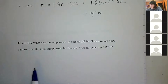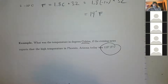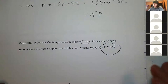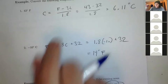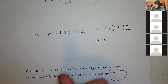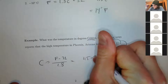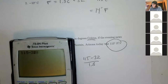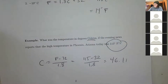Word problem: 'What was the temperature in degrees Celsius if the evening news reports the high in Phoenix, Arizona was 115°F?' They just want you to convert Fahrenheit to Celsius in a practical context. Use C = (F − 32) / 1.8. Plug in 115: (115 − 32) / 1.8. Calculator: 115 − 32 divided by 1.8 gives approximately 46.11 degrees Celsius.